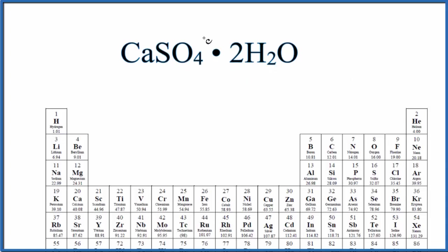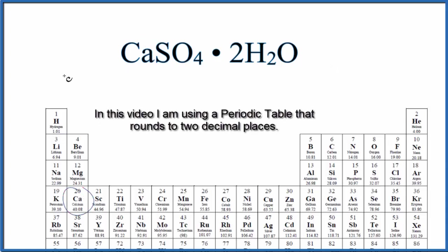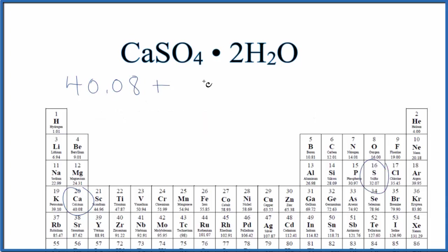Let's first find the molar mass for the calcium sulfate, and then we'll do the molar mass for the two water molecules and add those together. So calcium on the periodic table right here, 40.08 grams per mole, plus sulfur, 32.07 grams per mole, and then the oxygen. We have 16 here, but we have these four oxygen atoms, so we're going to multiply that by four.